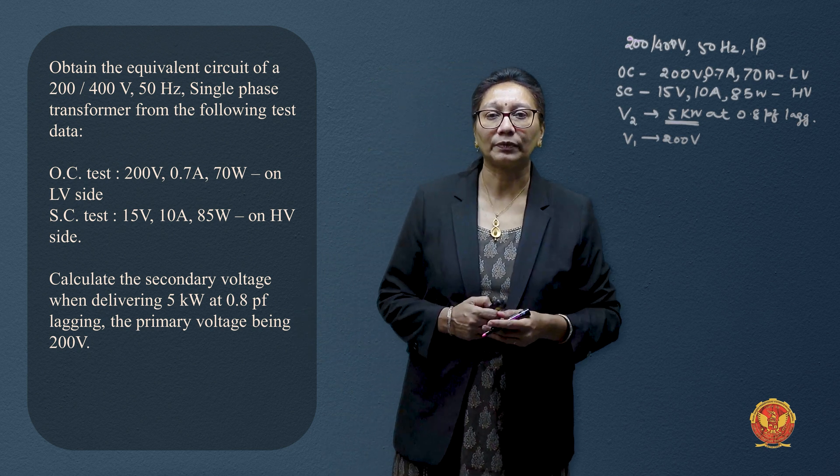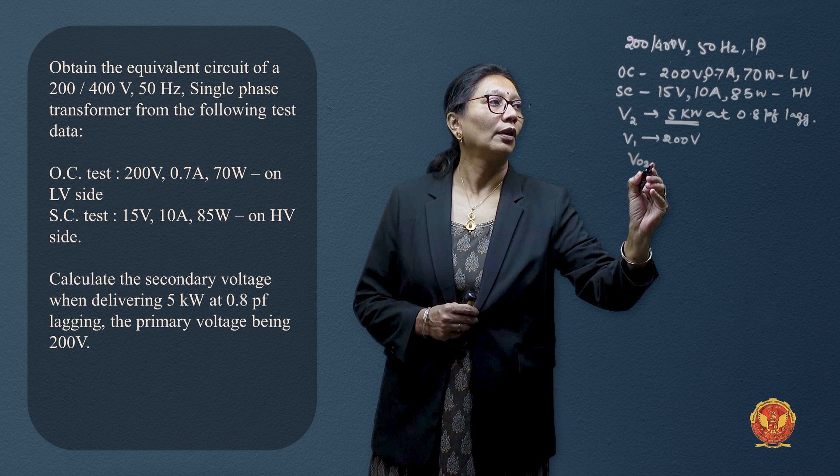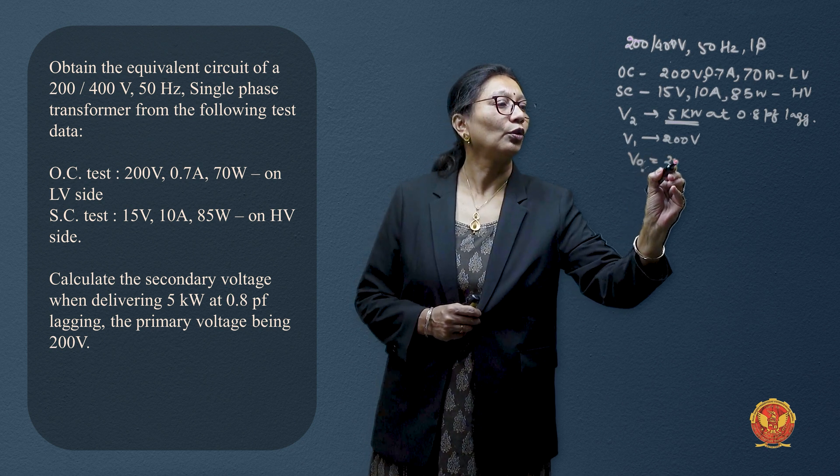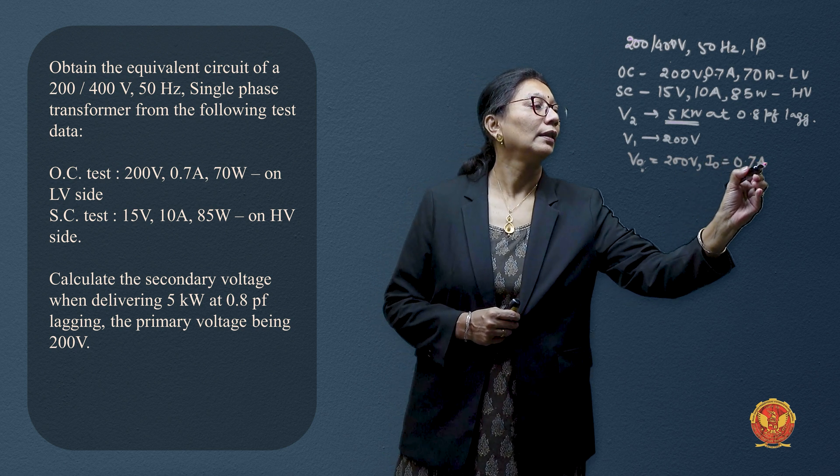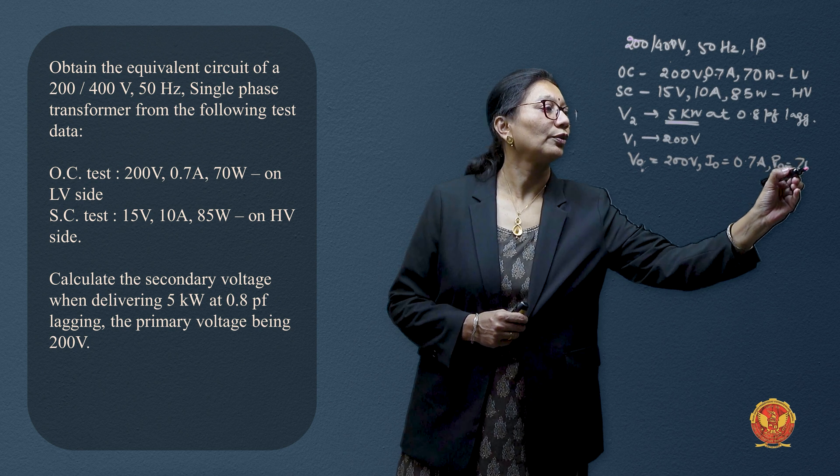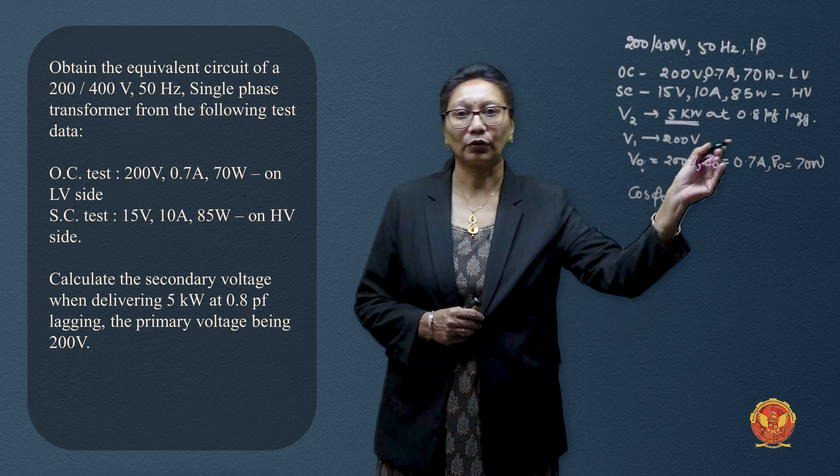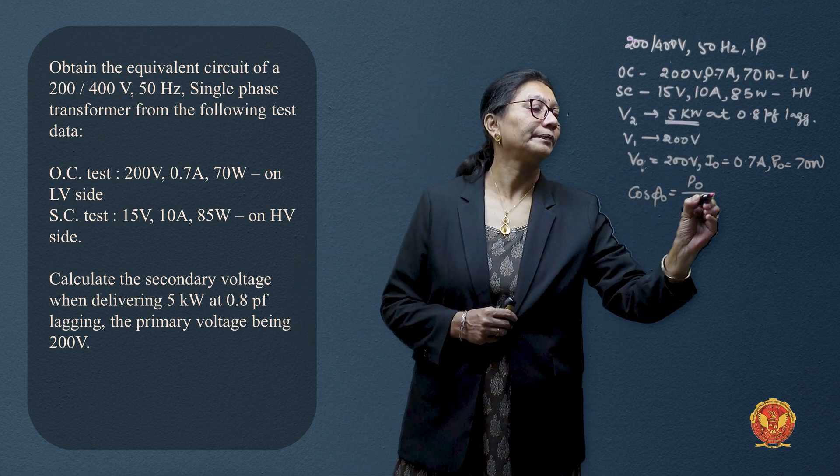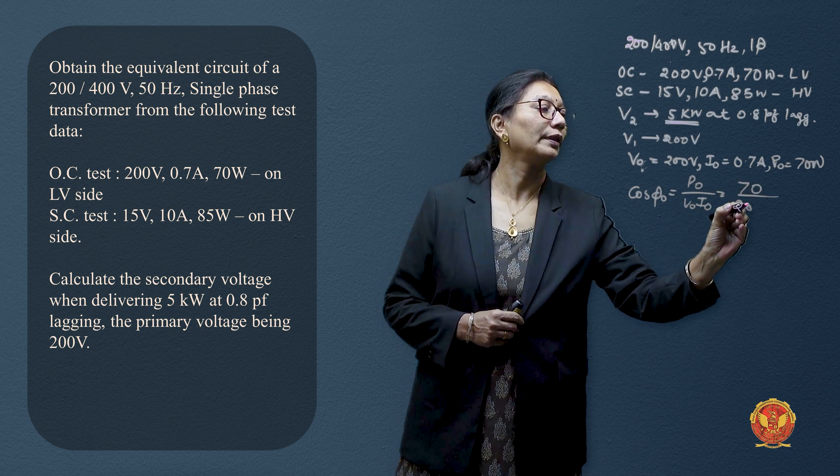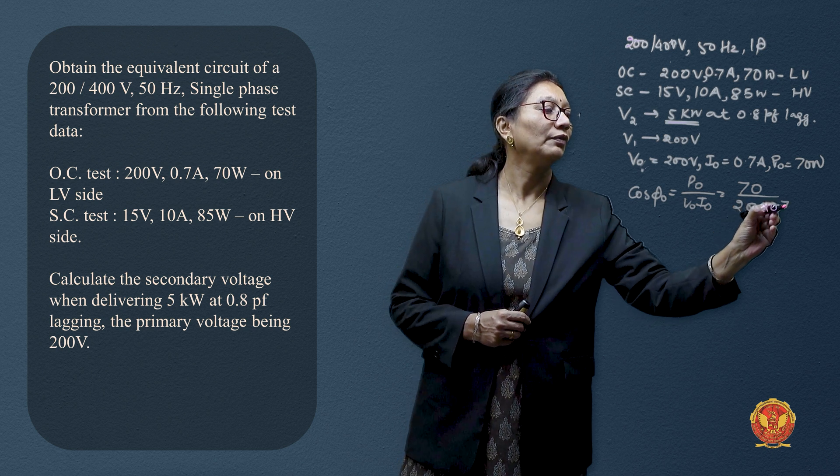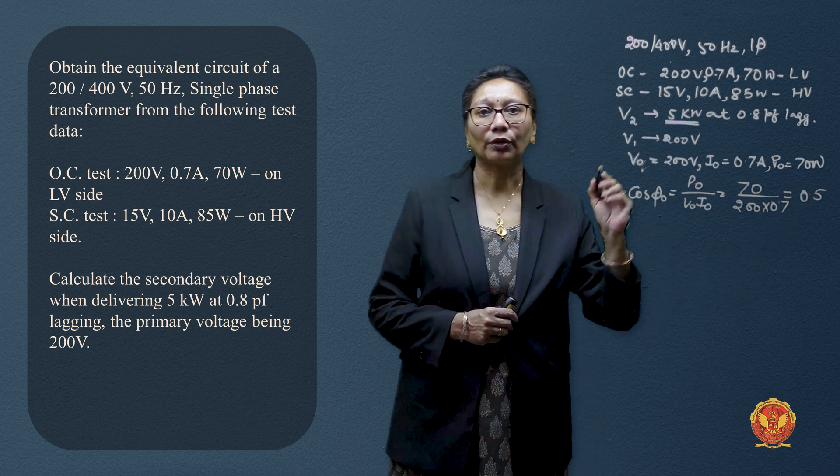From the open-circuit test, V0 is 200 volt, I0 is 0.7 amperes, and P0 is 70 watts. Let us calculate cos phi. It comes out to be P by VI or 70 divided by 200 into 0.7 which gives us the value of cos phi as 0.5.